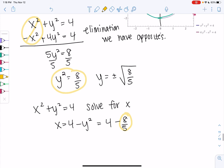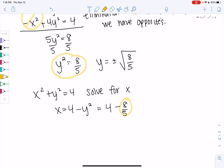So what do we get? 4 would be 20 over 5. So we get 20 over 5 minus 8 over 5, which is 12 fifths. And that's x squared.